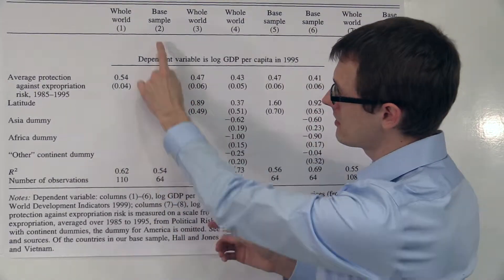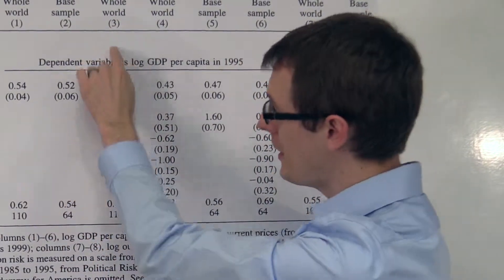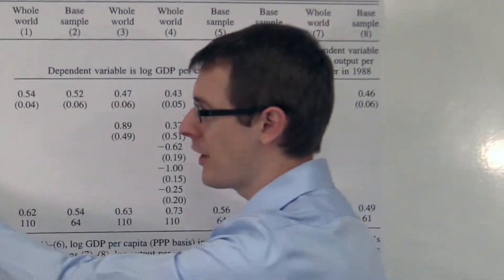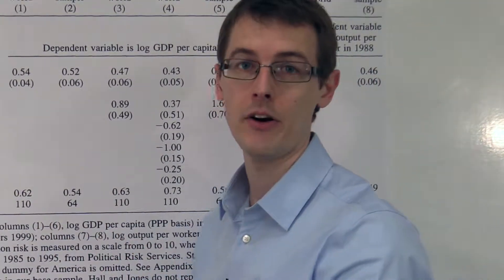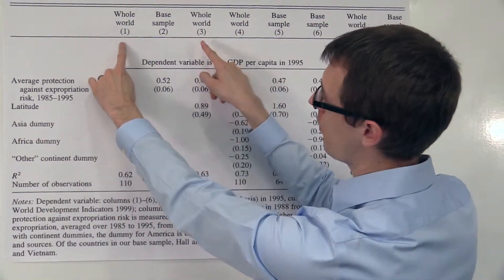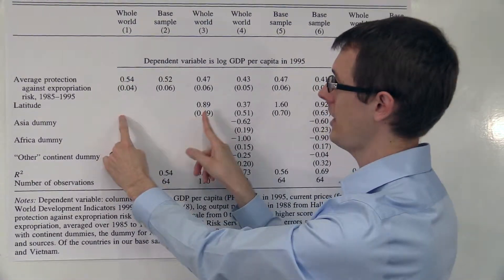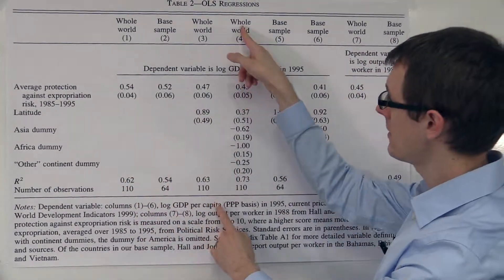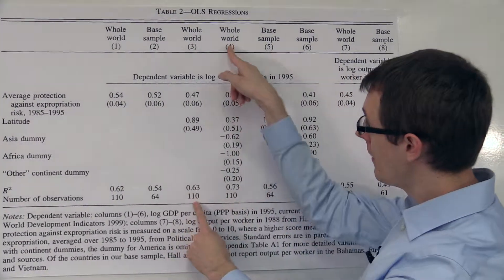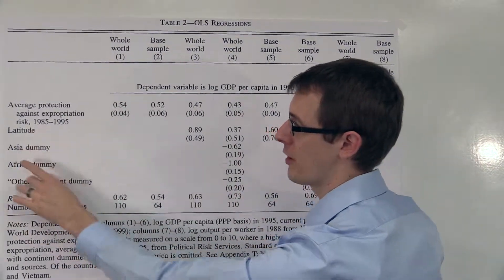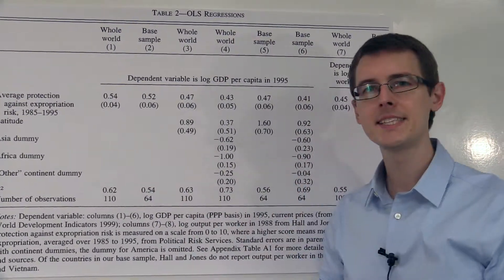Now specifications 2 and 3 are different. This one has a number here whereas this one doesn't. That means that in this specification, the variable latitude is included in the regression, whereas in this specification it's not. So if you look at the difference between 1 and 3, they're using the same number of observations, but 1 doesn't have latitude and 3 does. That's the same kind of difference between 3 and 4 — they're both using the same number of observations, but this specification has these additional variables whereas this one does not. That's why there's nothing here.